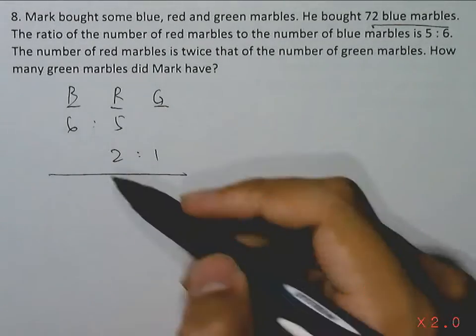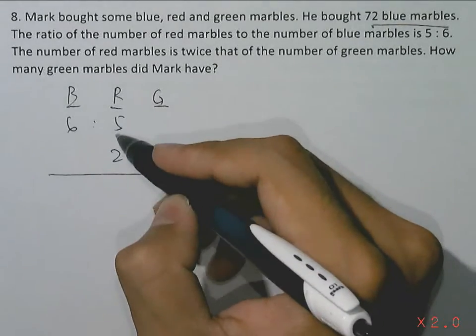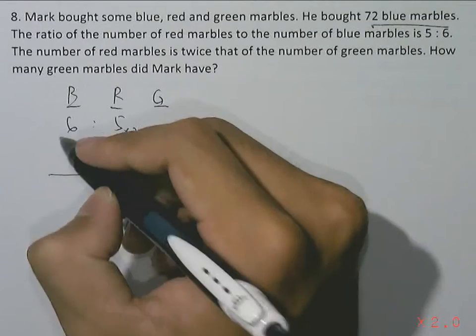We have to combine them. The overlapping part is the red - 5 and 2 - which we have to match into the common multiple of 5 and 2, which is 10. So that means the upper ratio has to multiply by 2.